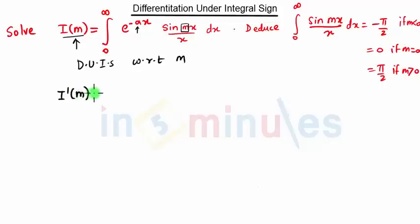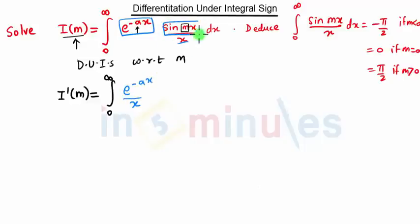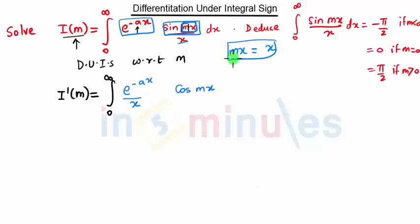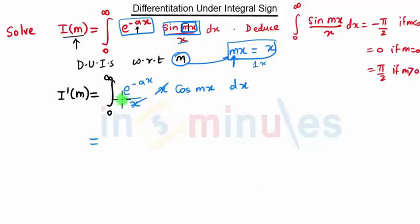So I'(m) equals the integral from 0 to infinity. Since we are differentiating with respect to m, x and a will remain constant, so e^(-ax)/x will remain constant. The derivative of sin(mx) is cos(mx) times the derivative of the inside term. The derivative of mx with respect to m is x, so x and x cancel, giving us the integral from 0 to infinity of e^(-ax) cos(mx) dx.